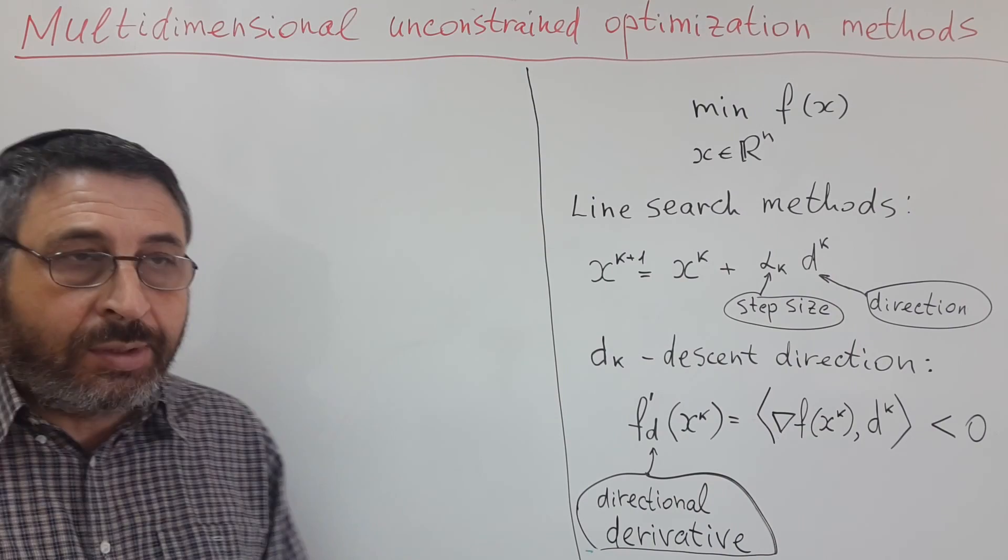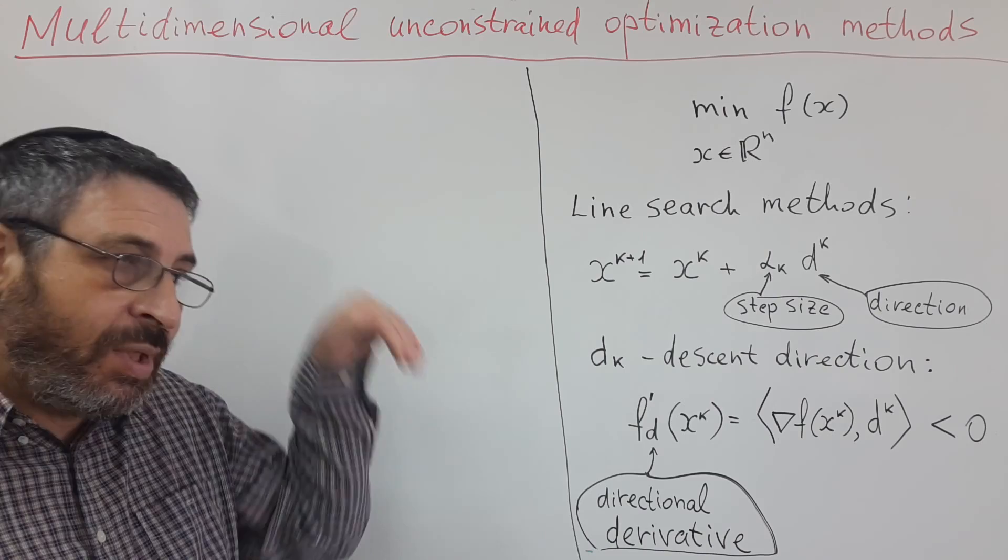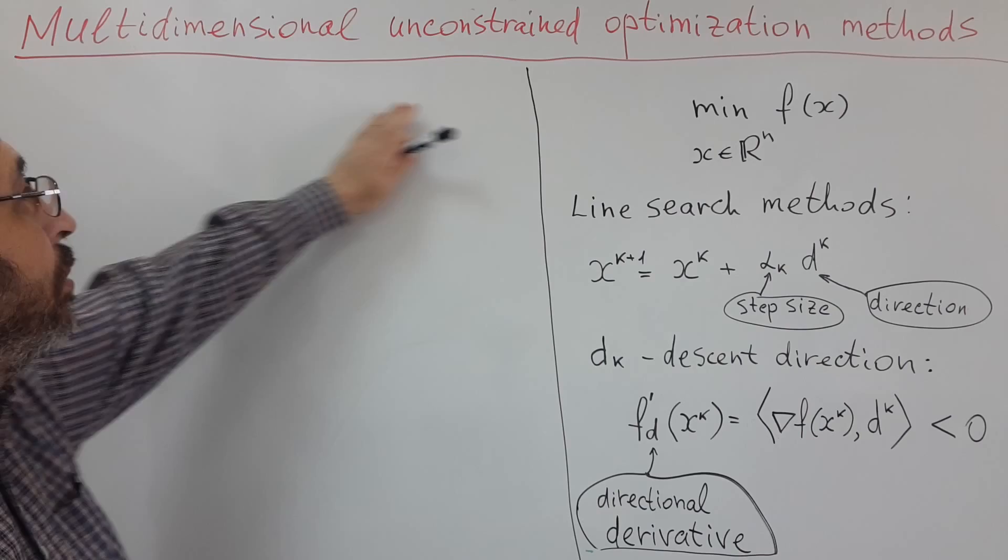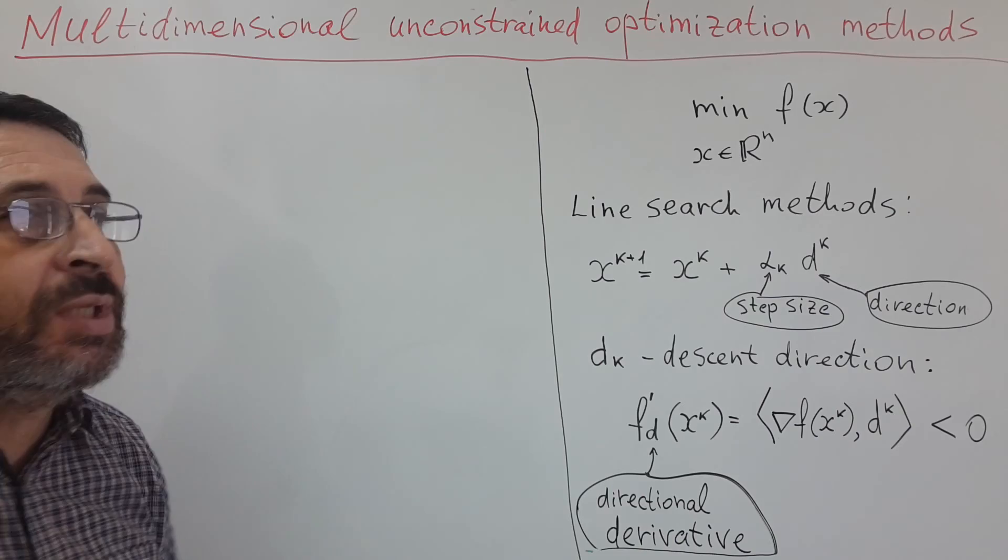We already learned methods of one-dimensional optimization, of minimization function of one variable. And now we are ready to move to one of the central topics of our course: multidimensional optimization.